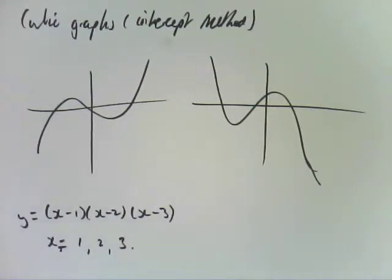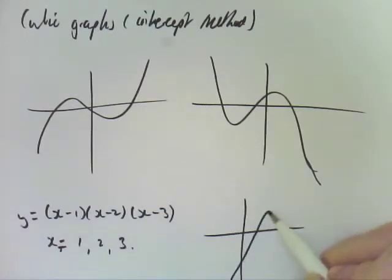So we're going to sketch that. It's a positive, x times x times x is x cubed, so it's positive. So it's going to start low and go high. It's going to cross at 1, 2 and 3, so it's going to cross at 1, 2, 3.